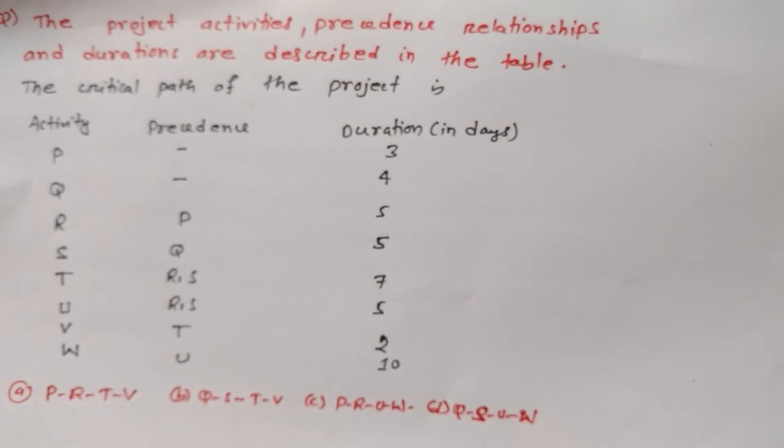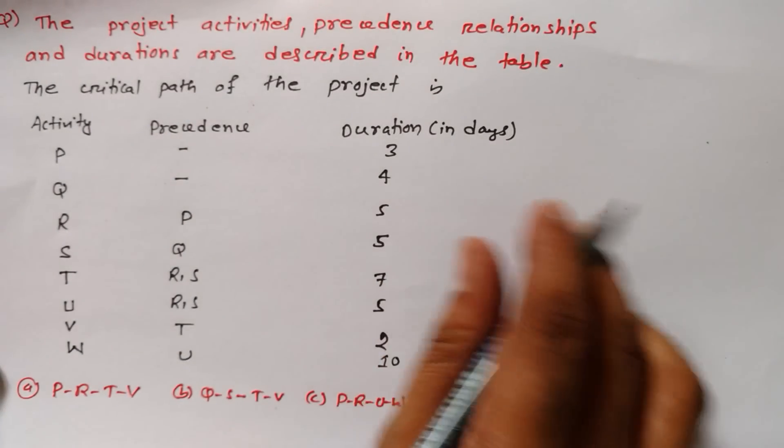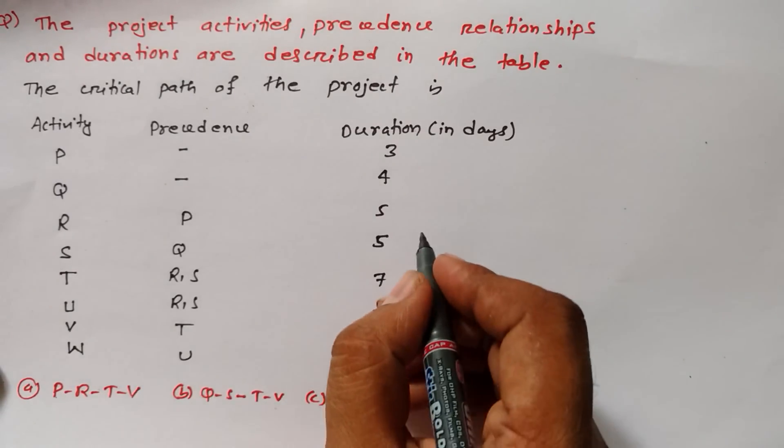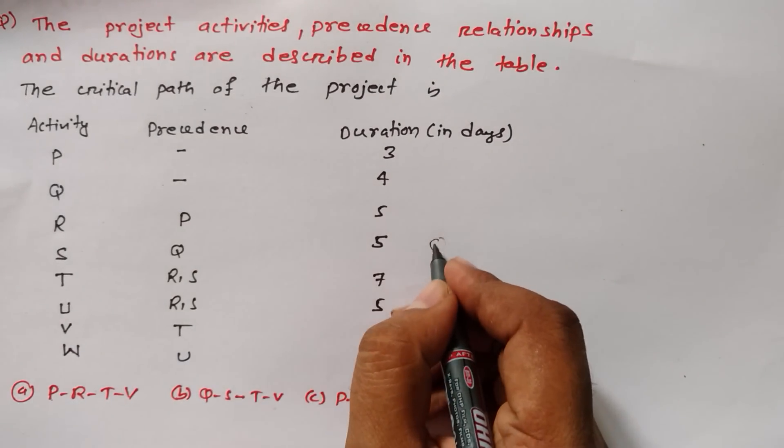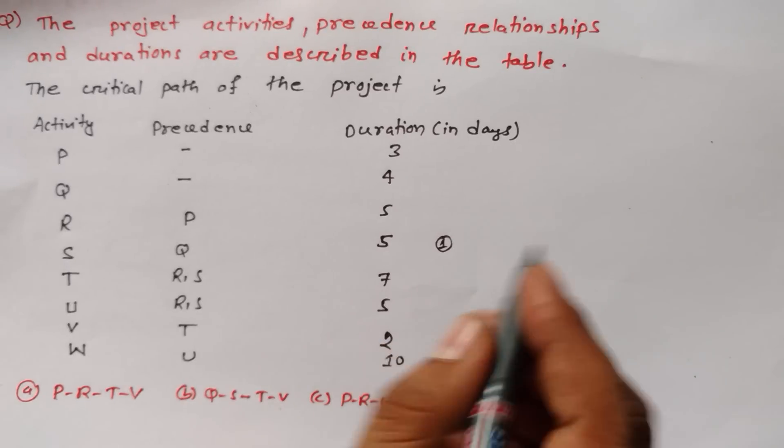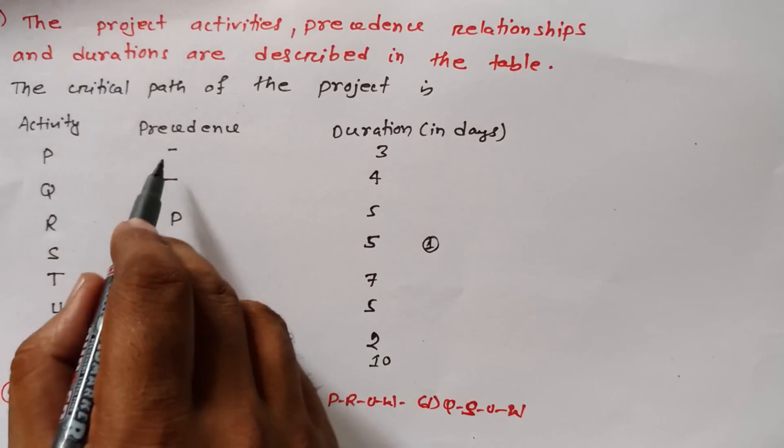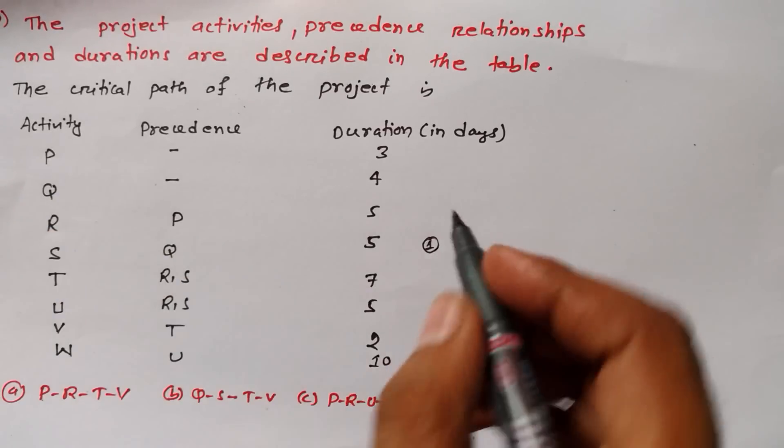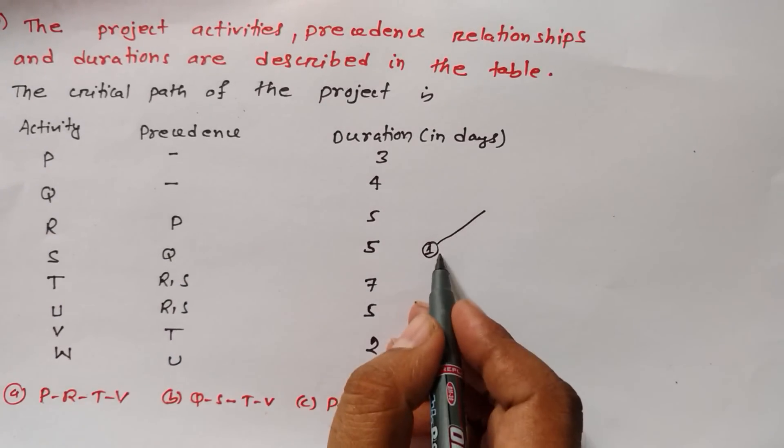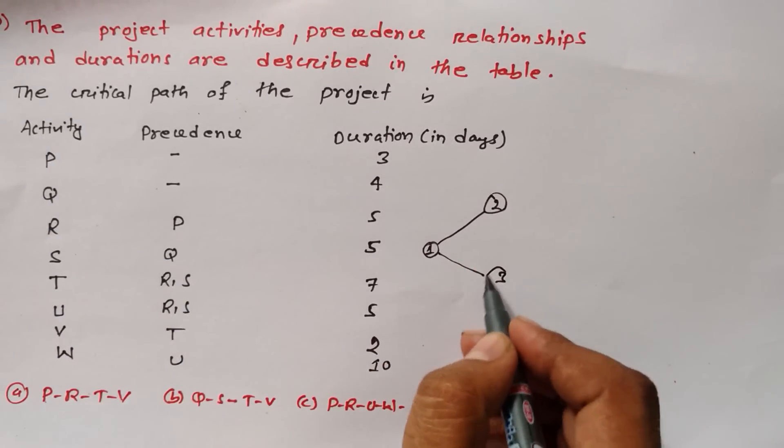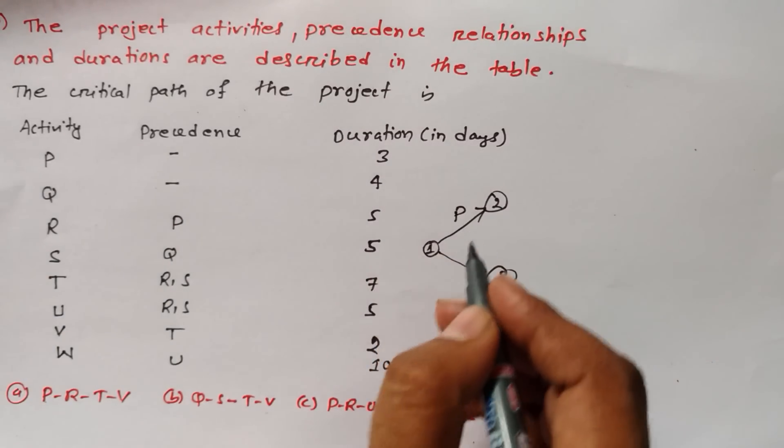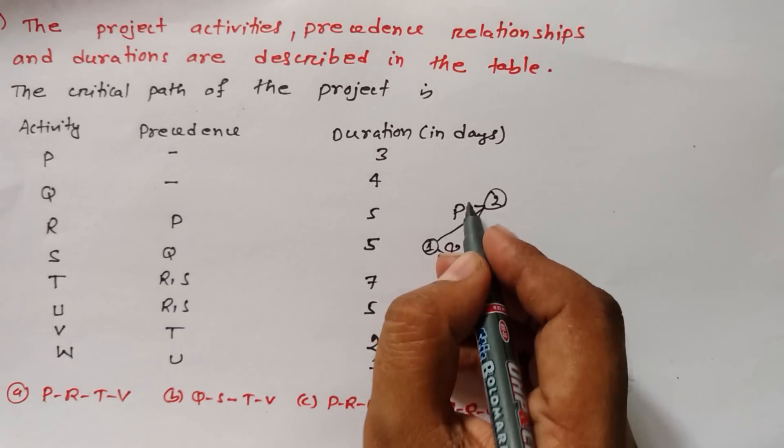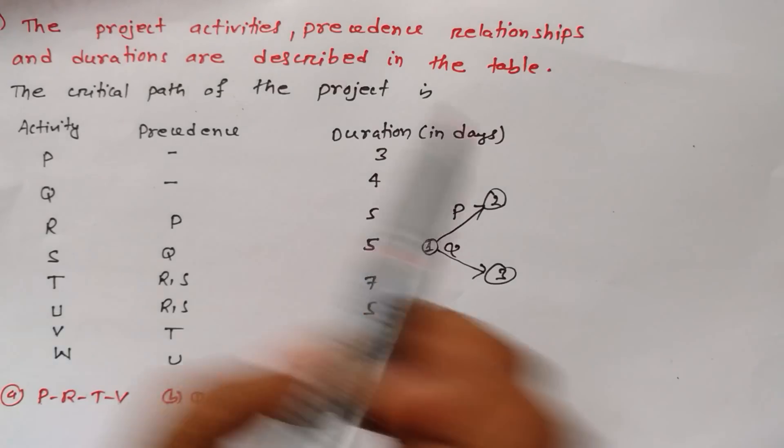Let me use first a black pen. I can draw here because we have lot of space. What we have to do first is precedence. We are starting from one. From precedence one we are having two activities, P and Q. Two arrows would be like this, activities P and Q. P is taking three days and Q is taking four days.